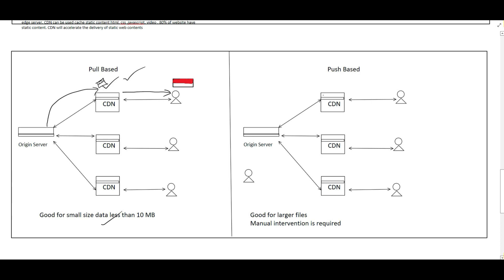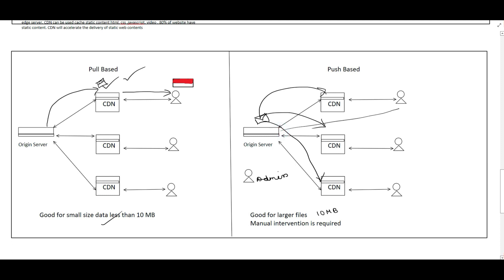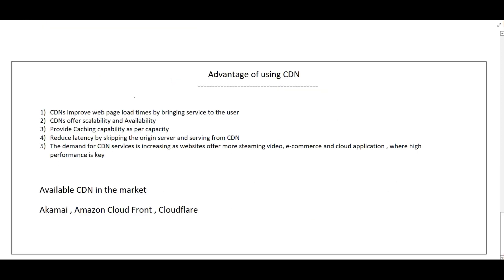In push-based CDN, manual intervention is required. It is suitable for larger files — greater than 10 MB or 100 MB file size. Basically, an admin is required who uploads the video from the original server to the CDN networks. From there, users can get the video from that particular CDN. If the video is not present in the CDN, the user will again query the main server to get the video.